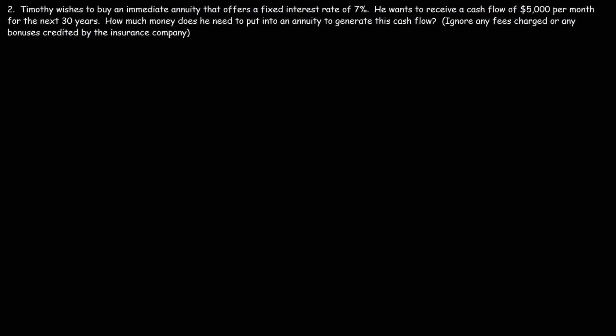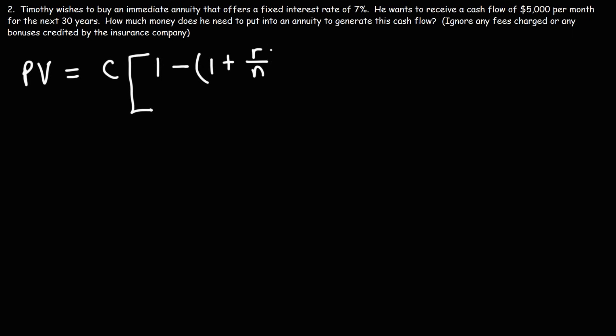We're going to use the same formula, but modified to account for monthly cash flow instead of yearly payments. The present value of the annuity equals the monthly cash flow times [1 minus (1 plus r/n) raised to the negative n·t], all divided by r/n.